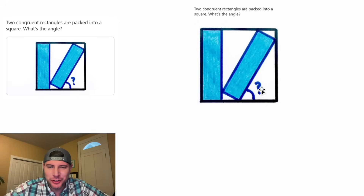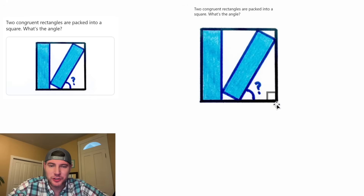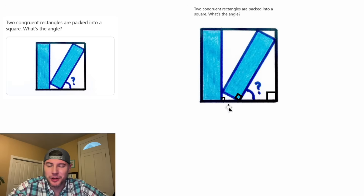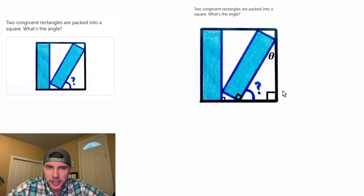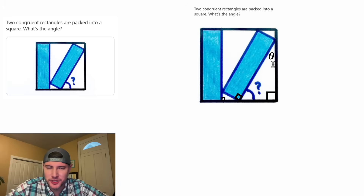Since we're trying to solve for an angle, let's focus on some of the other angles. This one is a right angle because it's part of a square. This is a right angle because it's part of a rectangle. And this is a right angle because it's on the edge of this rectangle. And let's call this angle theta. In a right triangle, the angles always add up to 180 degrees, so we know that question mark plus 90 plus theta equals 180.